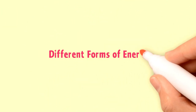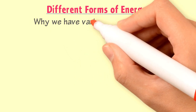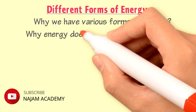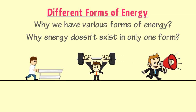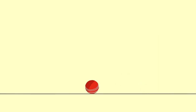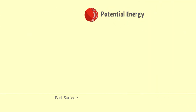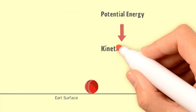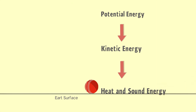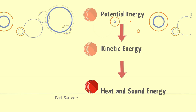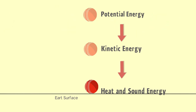We have different forms of energy. One can ask why we have various forms of energy, or why energy doesn't exist in only one form. The answer is simple: we do different works, or different bodies perform different sorts of work. For example, if you raise an object above the earth's surface, it possesses potential energy at a particular height. When you release it and it falls down, its potential energy is gradually converted into kinetic energy, and when it hits the ground, its kinetic energy is converted into heat and sound energy. Thus, a body in a specific state possesses a specific sort of energy, and energy gets a particular form at a particular state.